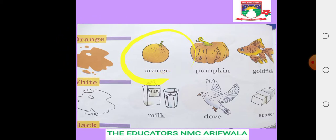Orange: O-R-A-N-G-E, orange. Pumpkin: P-U-M-P-K-I-N, pumpkin. Goldfish: G-O-L-D-F-I-S-H, goldfish.